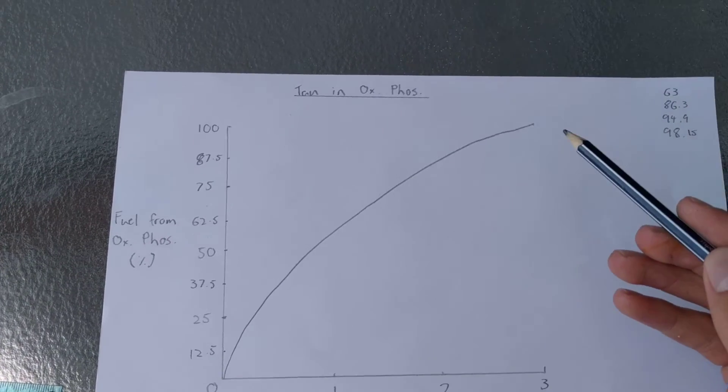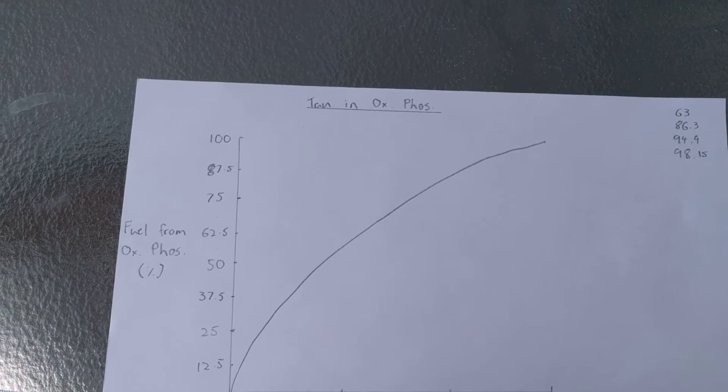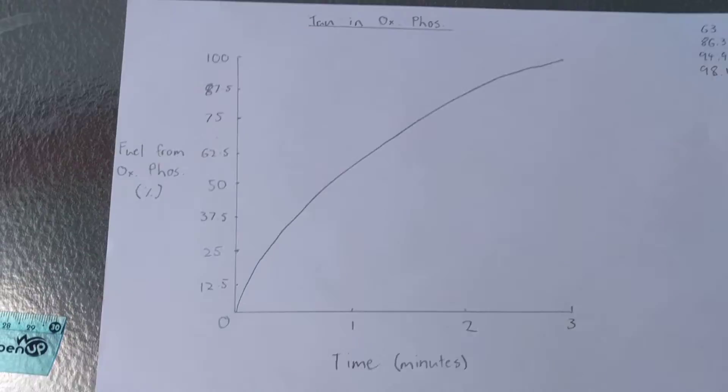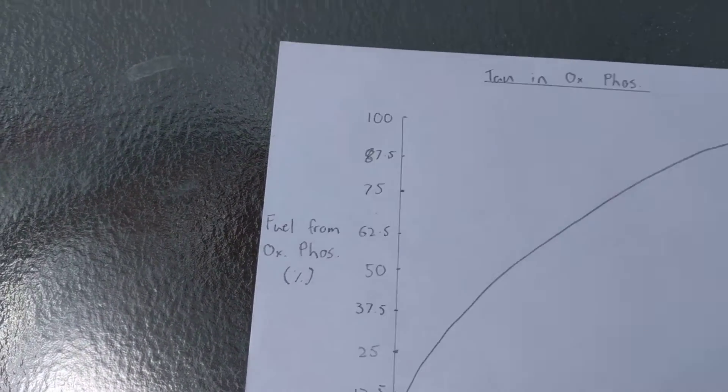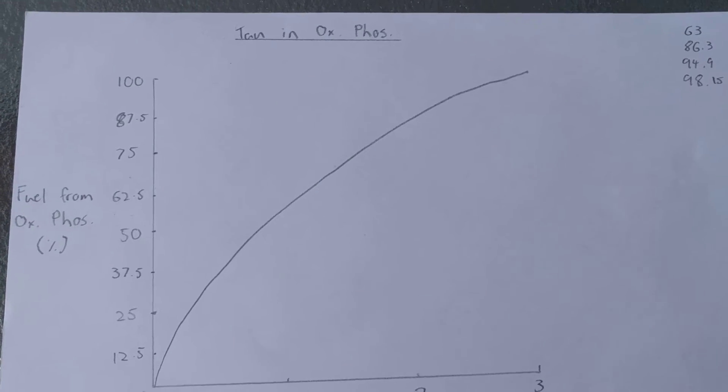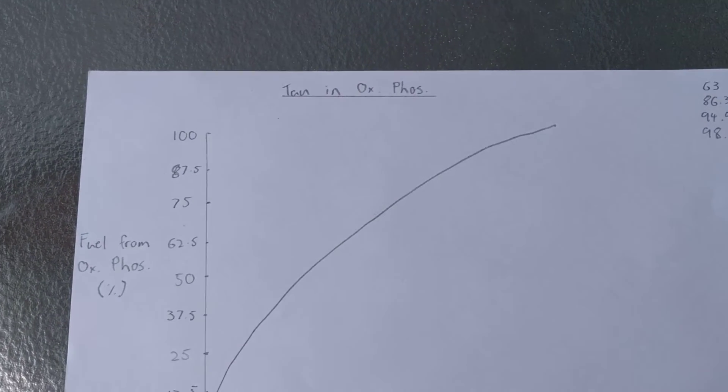Now this is the oxidative phosphorylation curve and how much ATP it's giving into the body, time in minutes, so one, two, three, and then that's showing the amount of fuel that oxidative phosphorylation is giving the body.